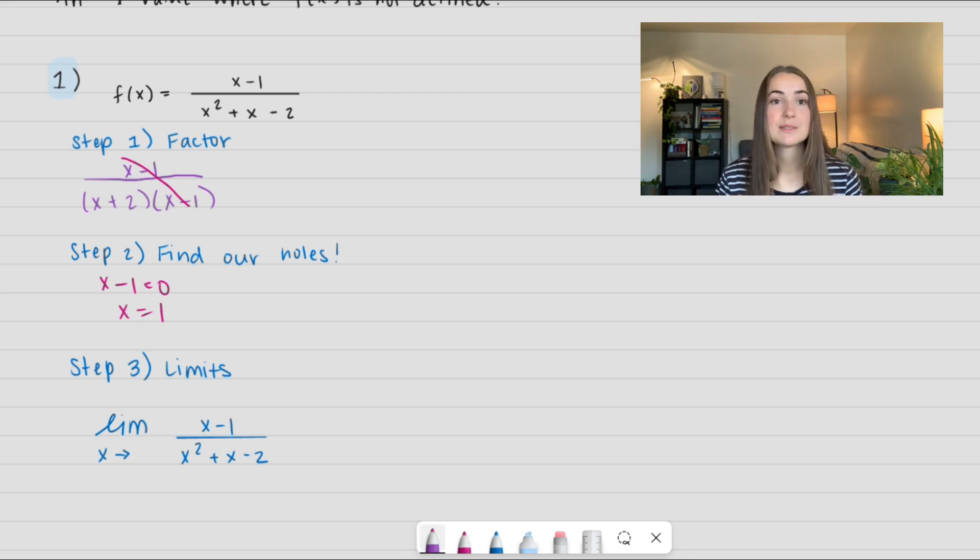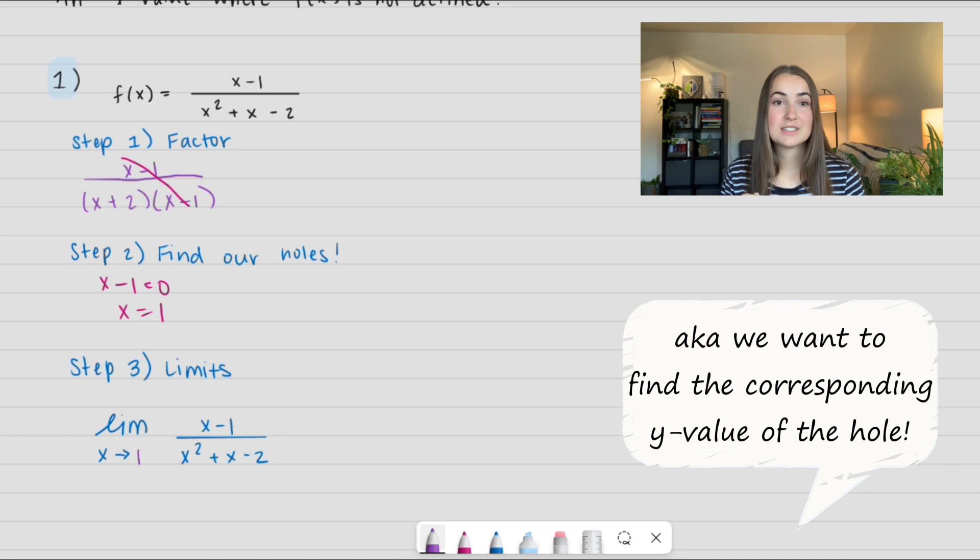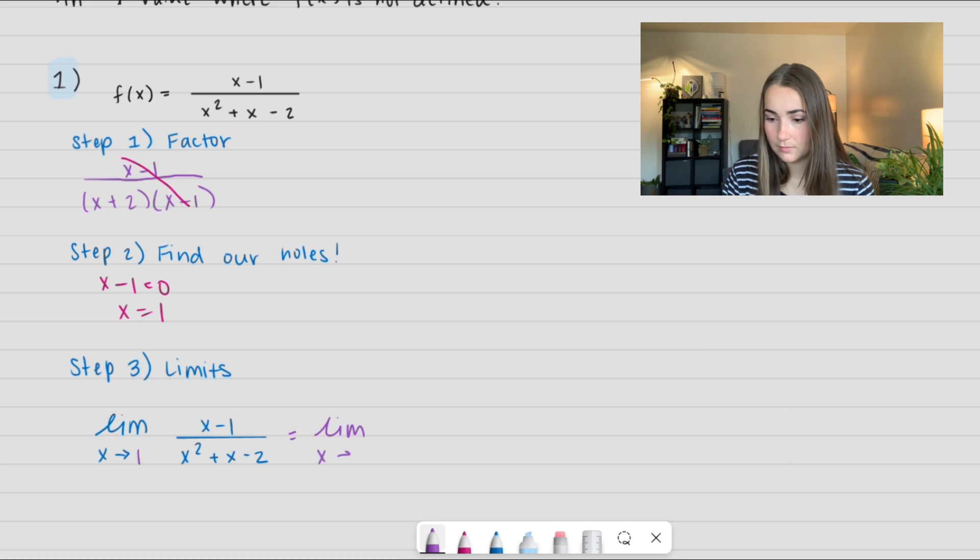In step three is where we apply the limit because we can see as we're approaching 1 from both sides what our function is doing, so we can still fill in that value. I'm going to use our simplified form. I can use direct substitution in this case, so I get 1/(1+2) which equals 1/3. So if I write this out officially, our hole is at (1, 1/3).